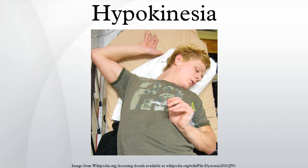Age of onset: Hypokinesia is displayed in the brain and outwardly slightly different depending on when an individual is first affected. In young-onset hypokinesia, typically slightly more cell loss occurs in the substantia nigra, with more displayed dystonia and muscle stiffness. In old-onset hypokinesia, typically more of a hypokinesic gait and difficulty walking are seen, with no dystonia. Both onsets can display resting tremor, although it is more generally found in old-onset cases.